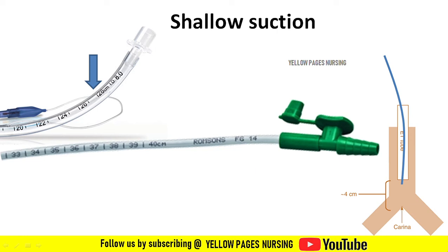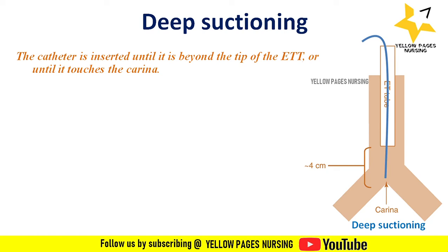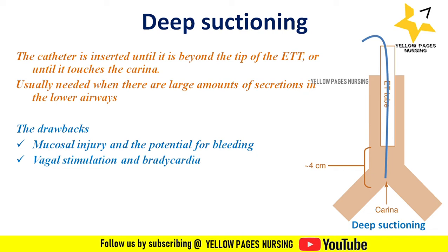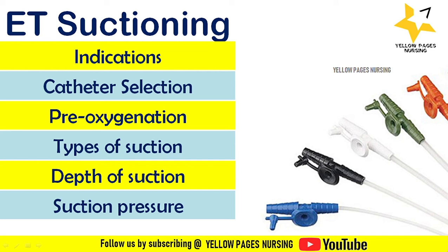When inserting the suction catheter, the 29-centimeter mark on the catheter should be at the arrow level shown on the image. In deep suctioning, the catheter is inserted beyond the tip of the endotracheal tube until it touches the carina. This is usually needed when there are large amounts of secretion in the lower airways. Deep suctioning can cause mucosal injury, potential bleeding, vagal stimulation and bradycardia, mucosal ulceration and necrosis, inflammation, infection, and desaturation.